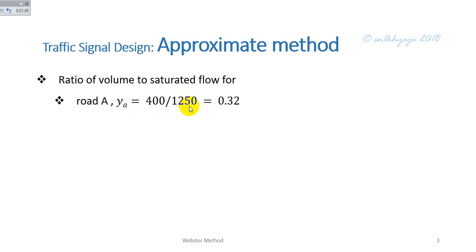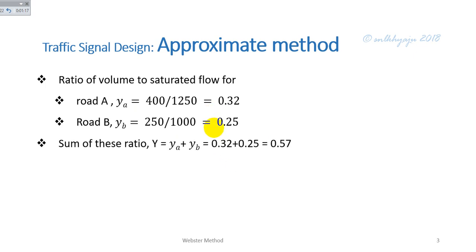Similarly for road B, y_b equals 250 divided by 1000, which is 0.25. Then sum of these ratios, Y, is calculated as 0.57.